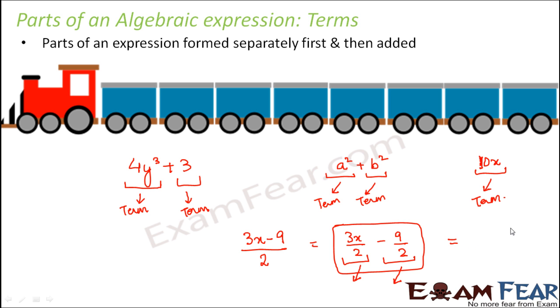You might ask that here the two terms are not getting added, but basically when you have a minus sign that actually means adding the additive inverse of it. So this basically means plus 3x by 2 plus minus 9 by 2. This is what it actually means. So 3x by 2 is one term and minus 9 by 2 is another term.